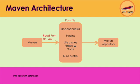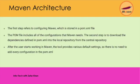The POM file includes all the configuration that Maven needs. The second step is to download the dependencies defined in pom.xml. Whatever configuration is defined in the pom.xml, it will download from the remote repository to the local repository. After the user starts working in Maven, the tool provides various default settings, so there is no need to add every configuration in the pom.xml file.